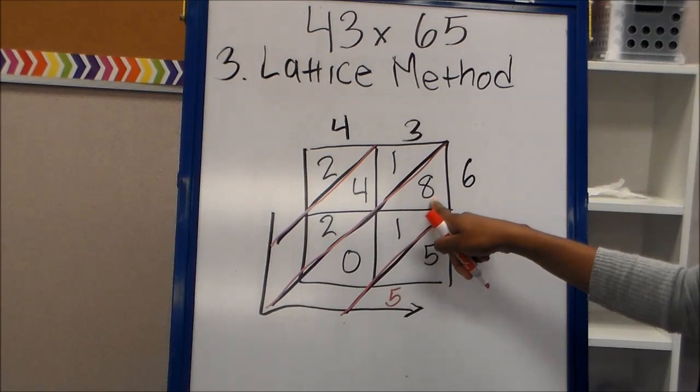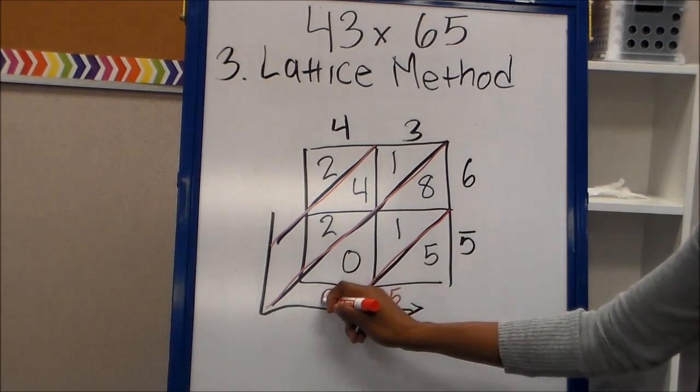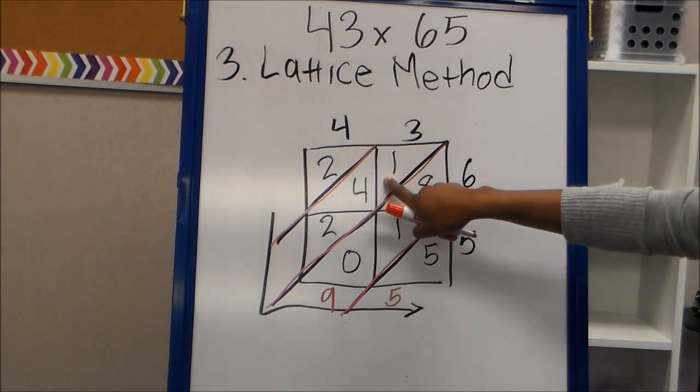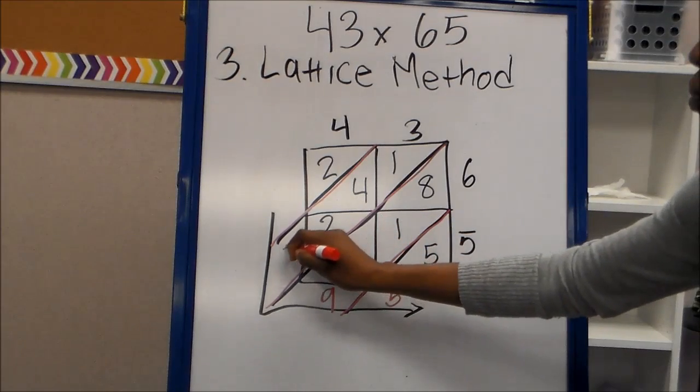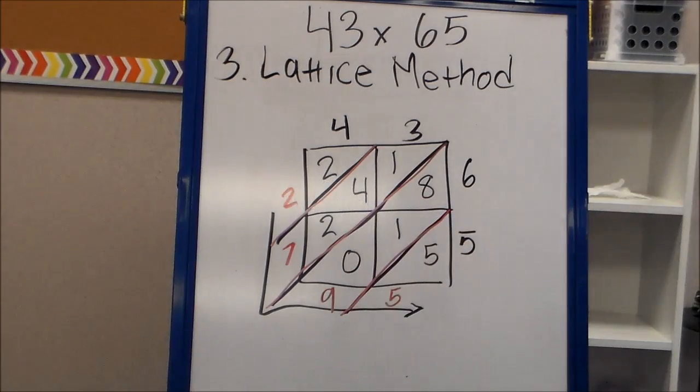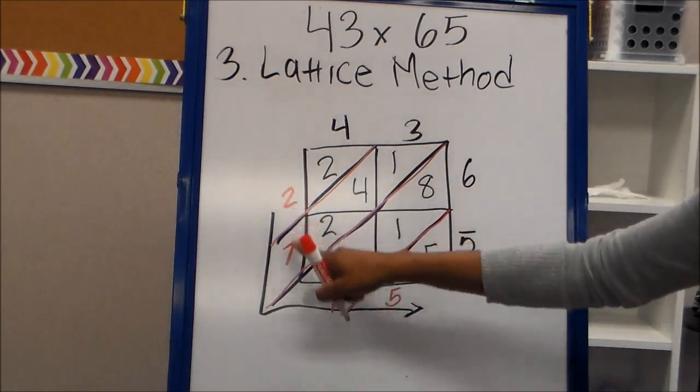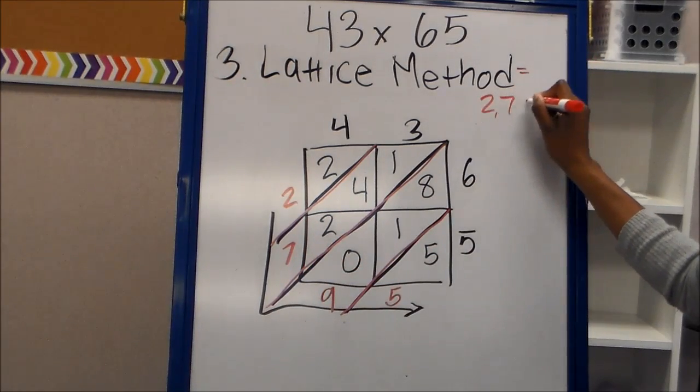My next diagonal is eight plus one plus zero, which gives me nine. And I put my answer there. Then my next diagonal, one plus four is five, plus two more is seven. And then my last diagonal, I have just two. And that's my answer. So I have 2,795. 2,795.